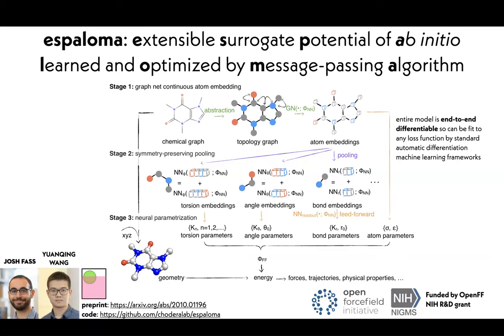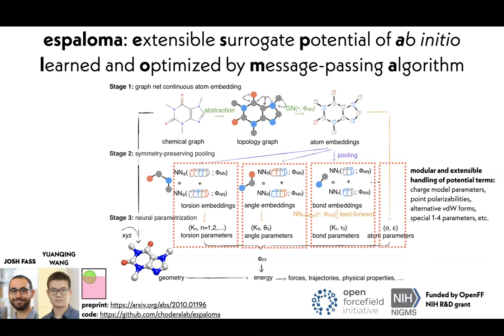You feed these into a feedforward neural network that emits the parameters needed for your force field. This creates a very modular approach that is also fully end-to-end differentiable. If we wanted to add point polarizability or special 1-4 parameters, we just take the appropriate type from stage 2 and add a neural network module to predict parameters for that new type, then refit the model. It learns both the typing in stage 1 and parameter prediction and interpolation in the final stage.